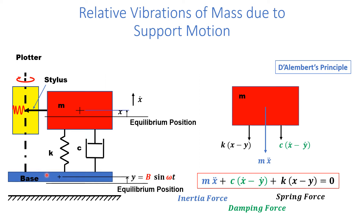To derive the differential equation of vibration, let at any instant the base be vibrating and be at a distance small y from the equilibrium position. The upward direction is taken as positive for this derivation. At the very same instant, the mass M is at a distance X from the equilibrium position and is moving away with a velocity X-dot.